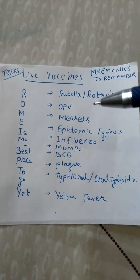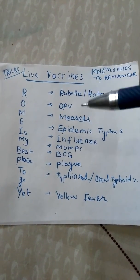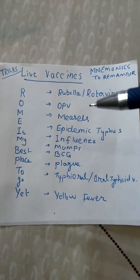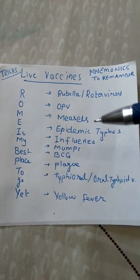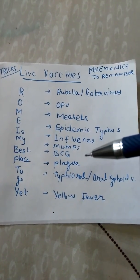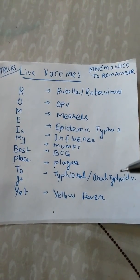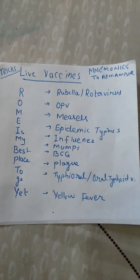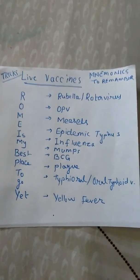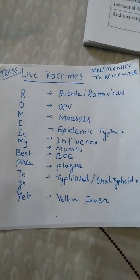To recap: Rubella, OPV, Measles, Epidemic Typhus, Influenza, Mumps, BCG, Plague, Typhoid oral vaccine, and Yellow Fever. One more thing — I'd like to share an additional mnemonic for this.